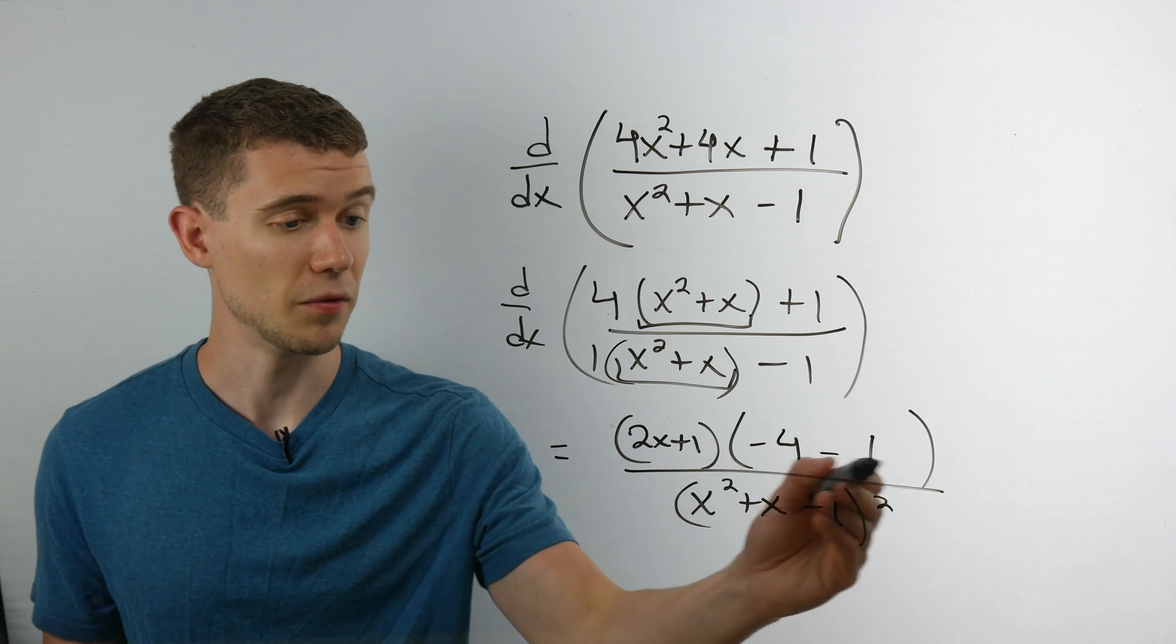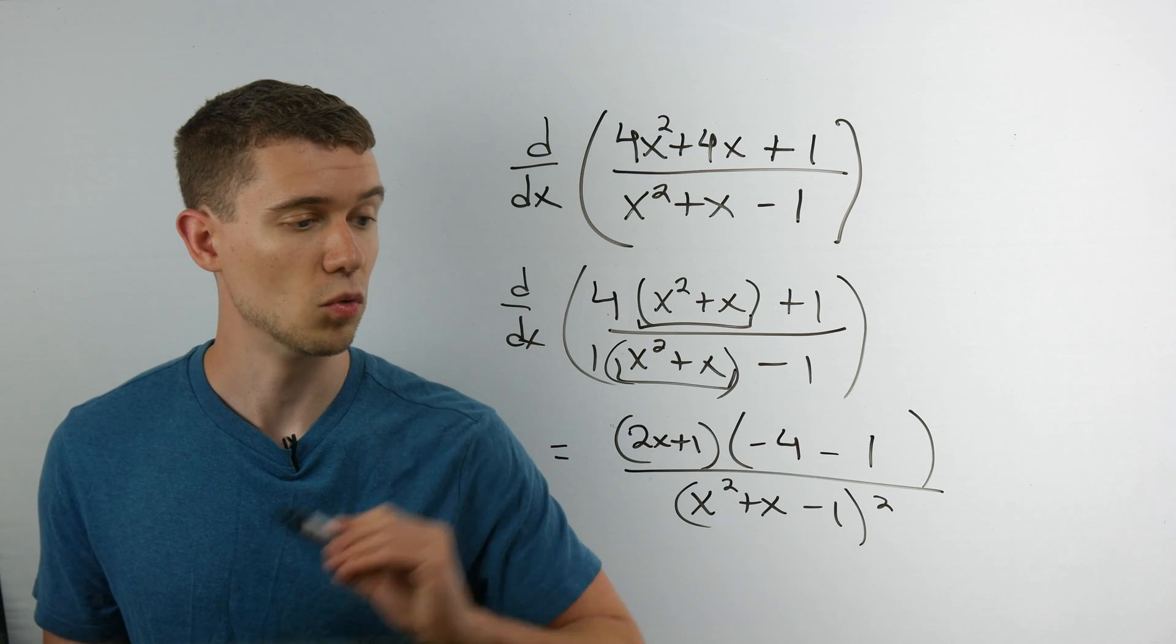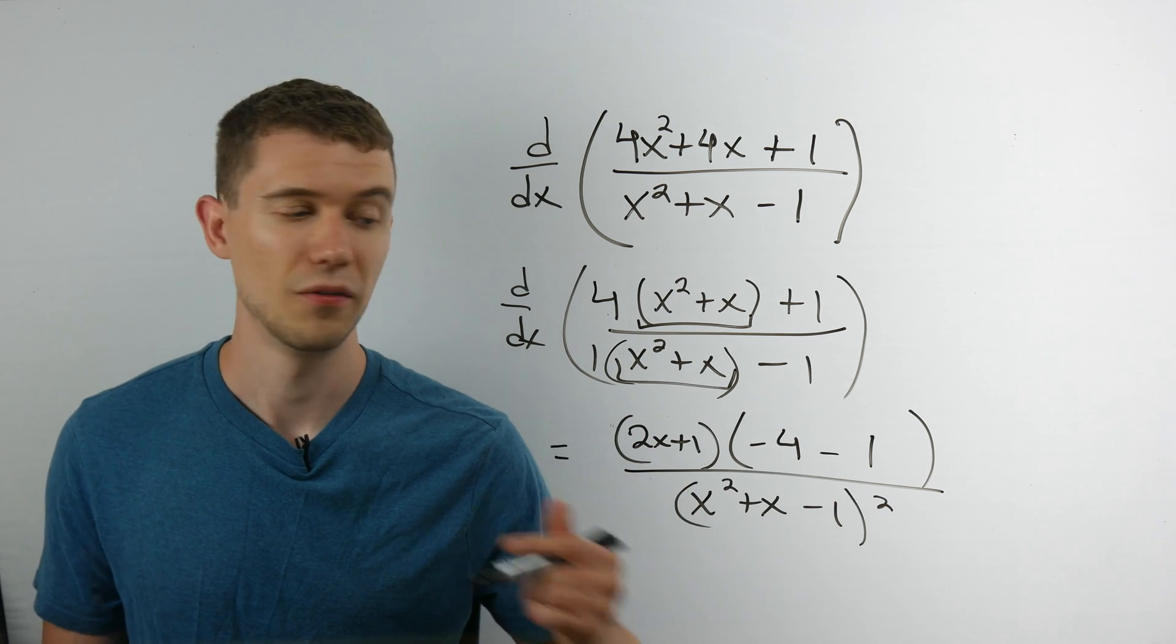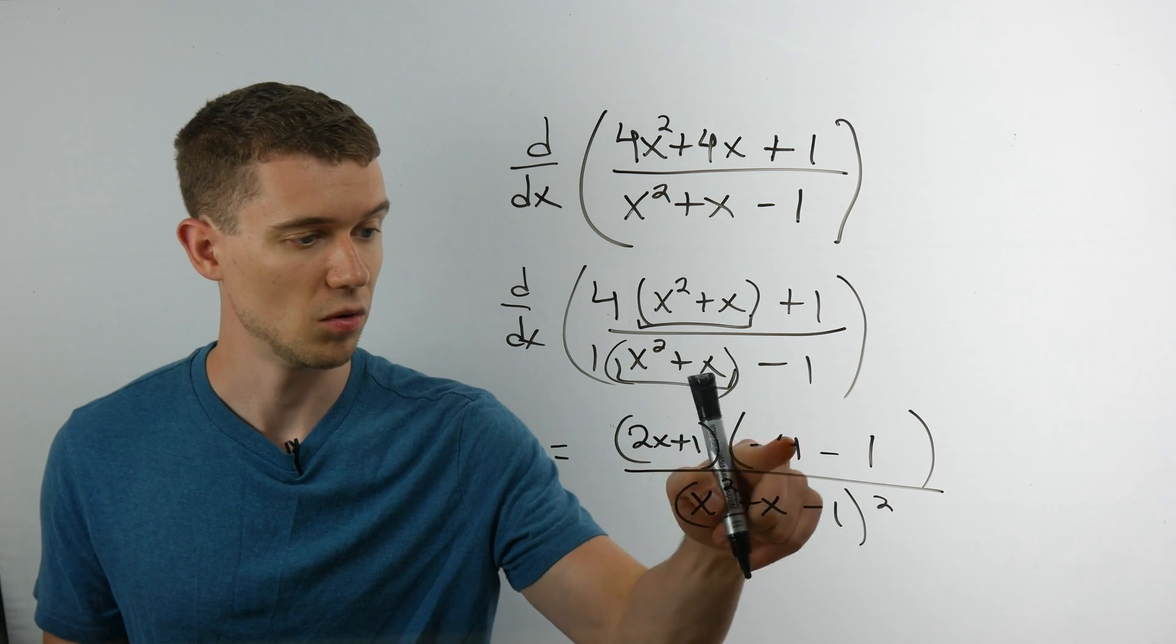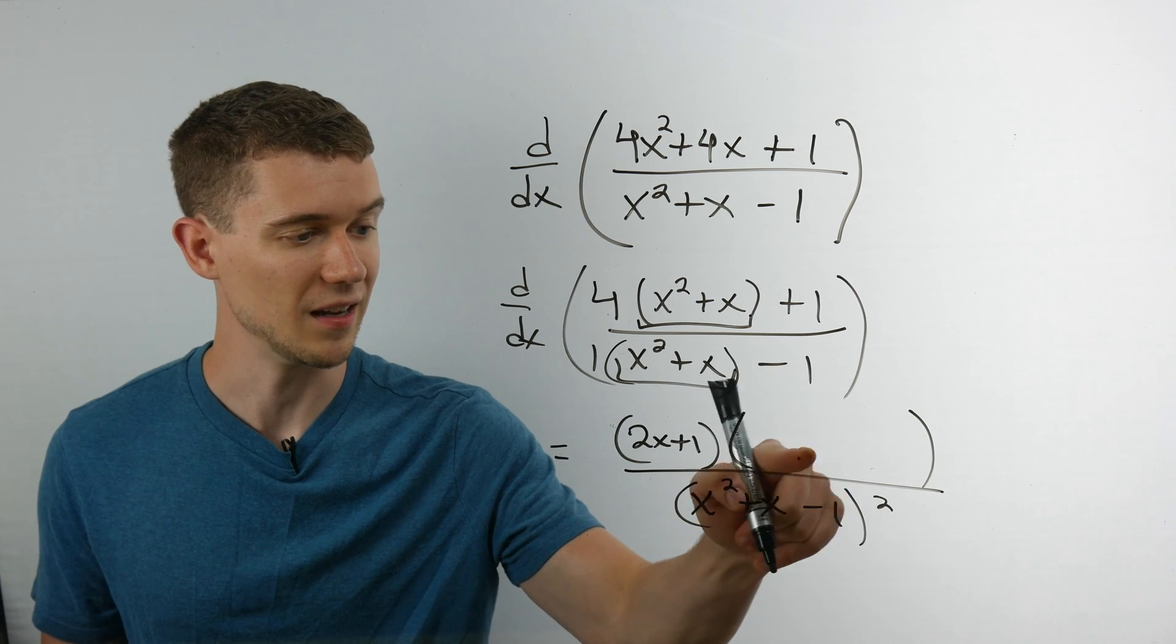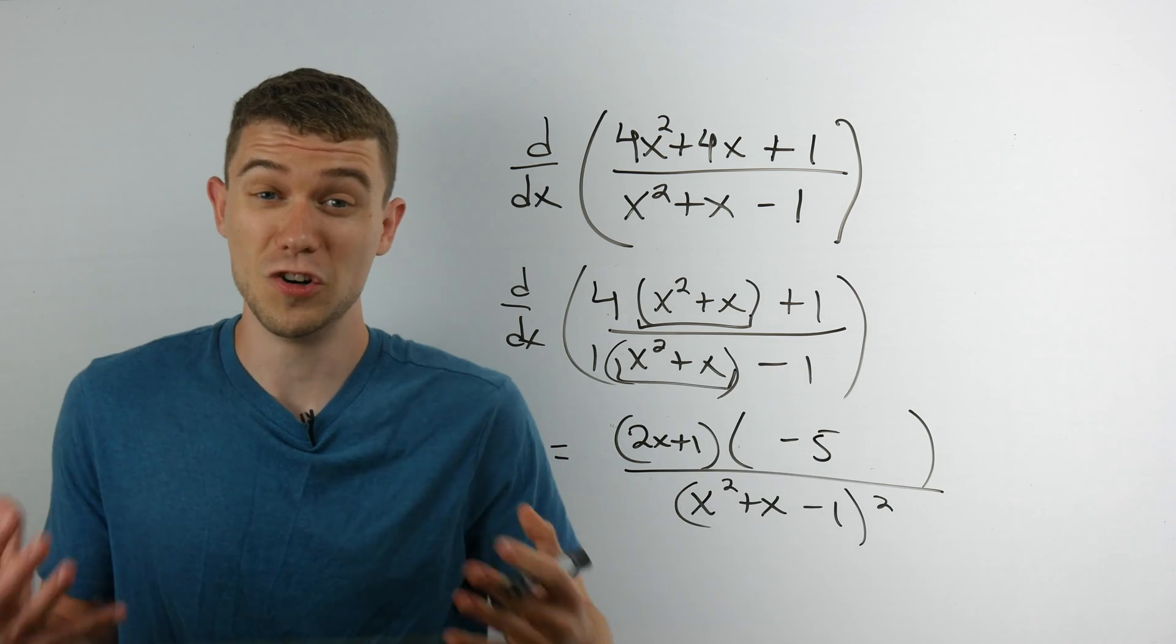And if you like you can simplify this. Minus 4 minus 1, that'll be a negative 5. You can simply replace this with a negative 5. And you're all done.